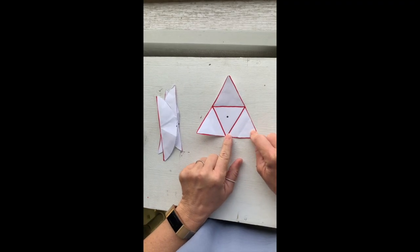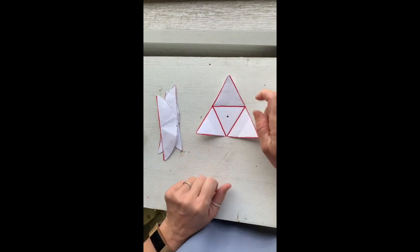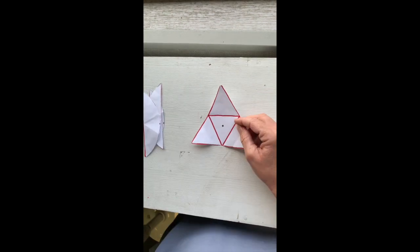Now I've created a large triangle from a circle, and I can clearly see the four triangles that make up the larger triangle.